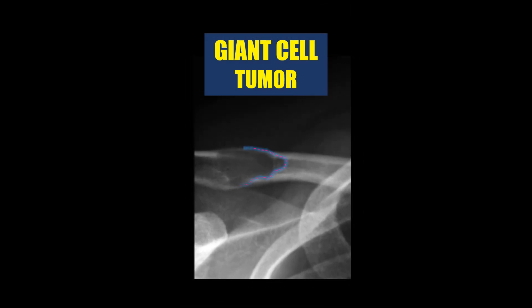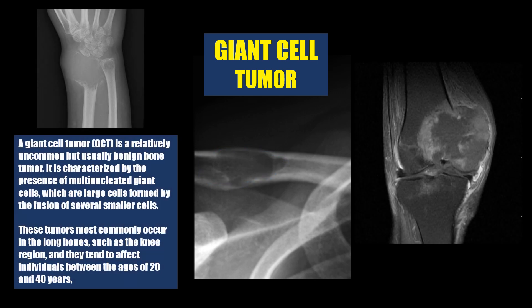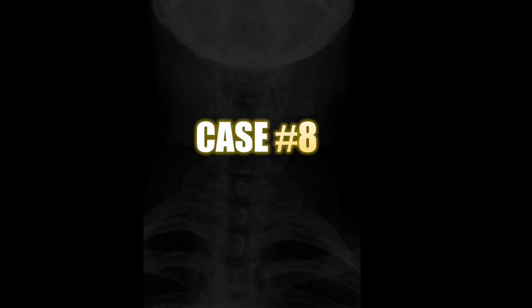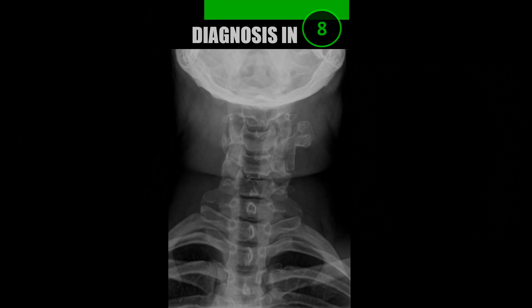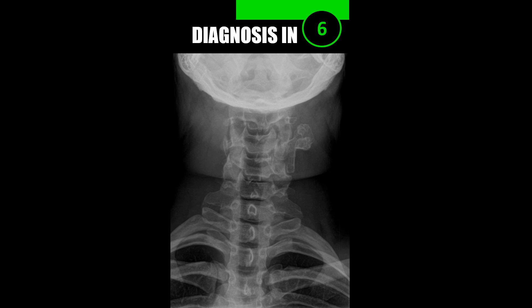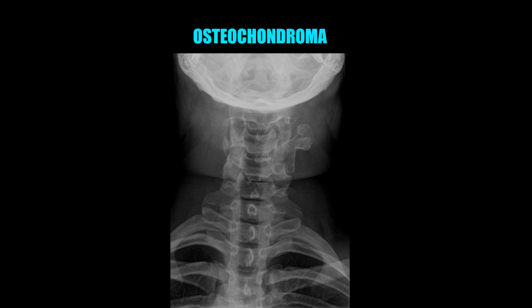Case number seven is a giant cell tumor of the distal clavicle. Giant cell tumor is a relatively uncommon but usually benign bone tumor. These tumors most commonly occur in the long bones such as the knee region, and they tend to affect individuals between the ages of 20 and 40.